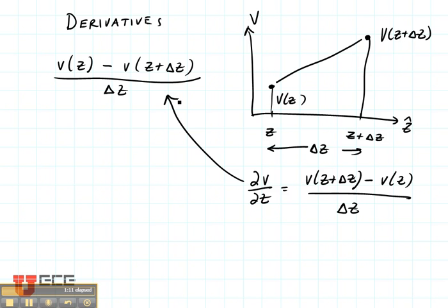You can see these two equations are identical except for the sign, so the equation we have here is minus dv/dz.